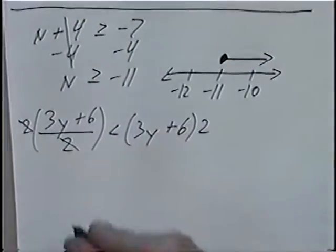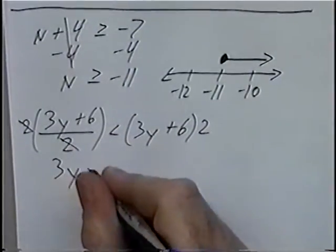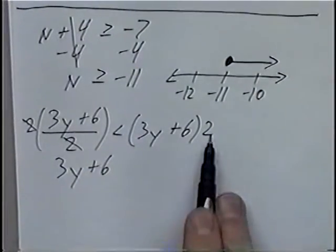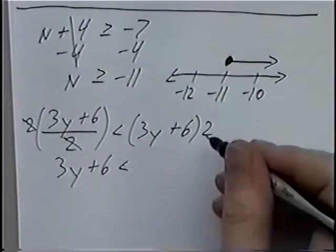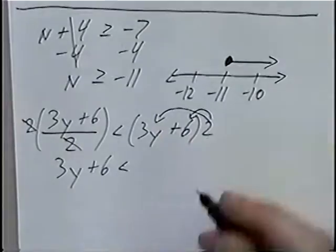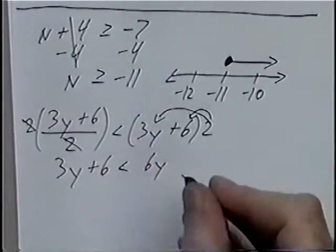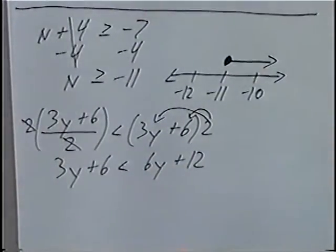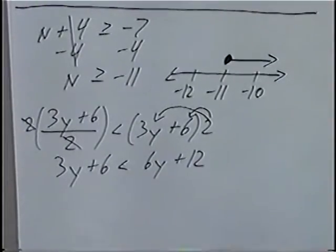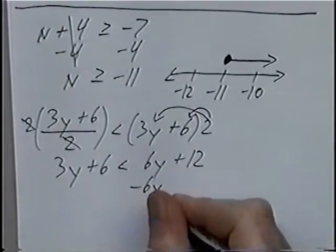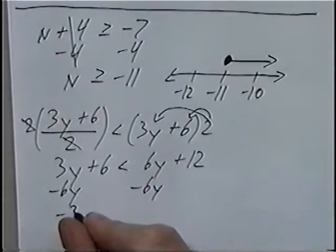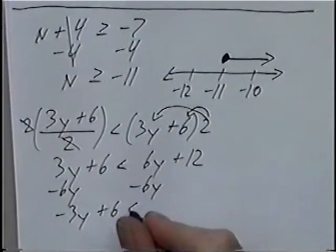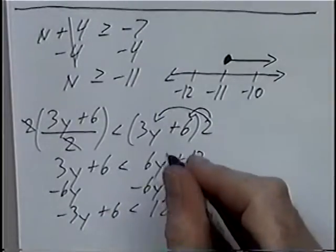The 2s on the left-hand side cancel, leaving 3y plus 6. Since we multiply by a positive 2, the inequality stays the same. Distributing the 2 on the right side gives us 6y plus 12. From here we can solve by putting all the y terms on the left-hand side. We subtract 6y: 3y minus 6y gives negative 3y plus 6, less than 12, and the 6y terms cancel.